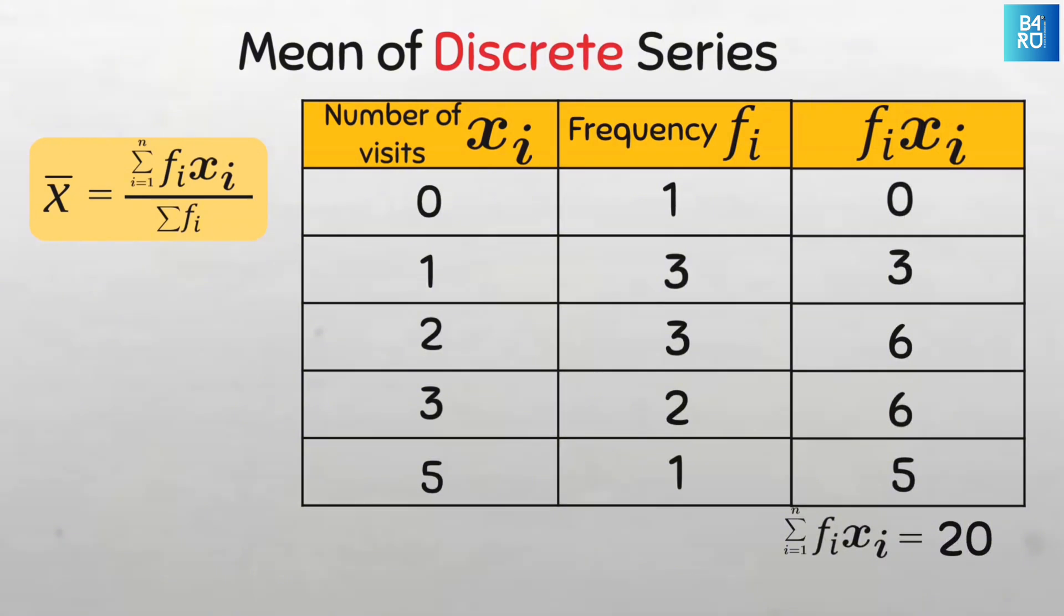Now the denominator for the formula is the sum of the frequencies, which is 10. The question even says that we have 10 children, right? So our mean is 20 divided by 10, giving a mean of 2. Easy peasy.